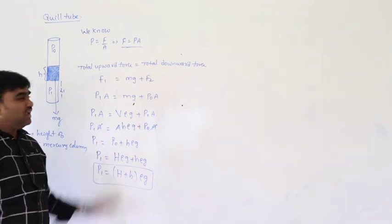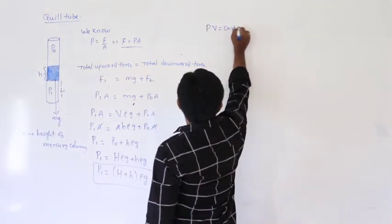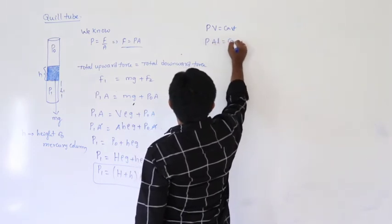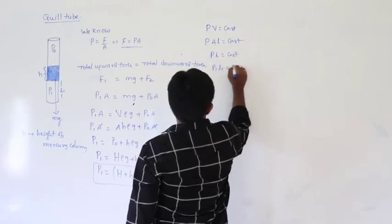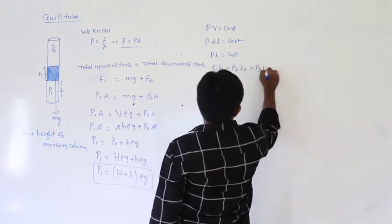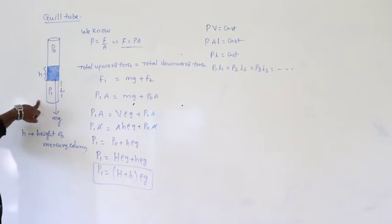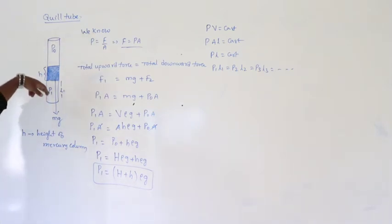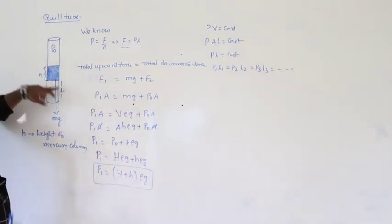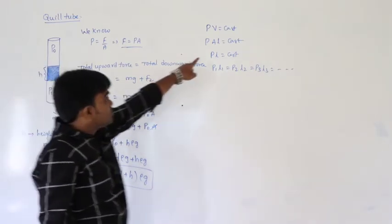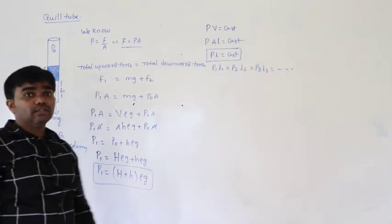This is based on Boyle's law. We know PV = constant. Since volume equals area times length and the cross-sectional area of the quill tube remains constant, we write P·L = constant. Therefore P1·L1 = P2·L2 = P3·L3, and so on. That is Boyle's law applied to the quill tube.